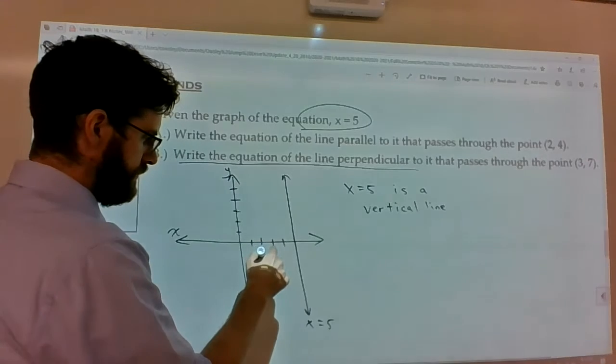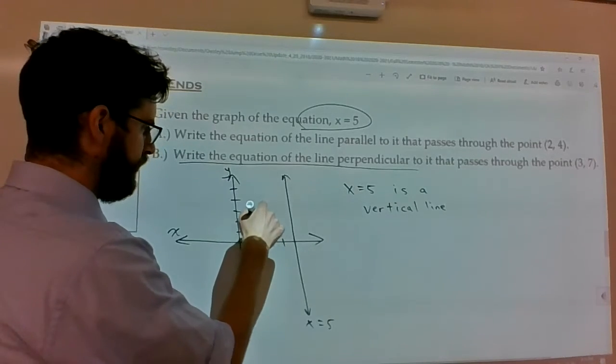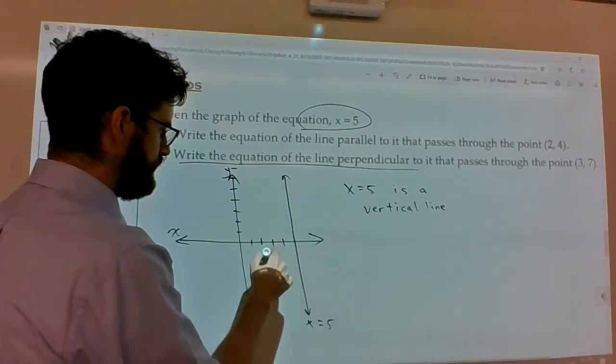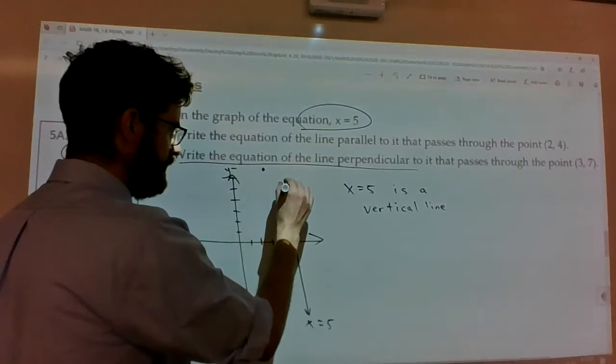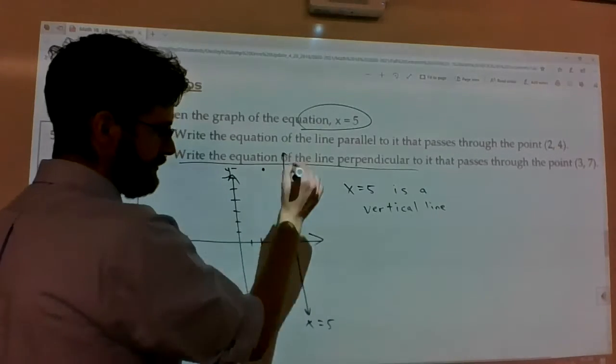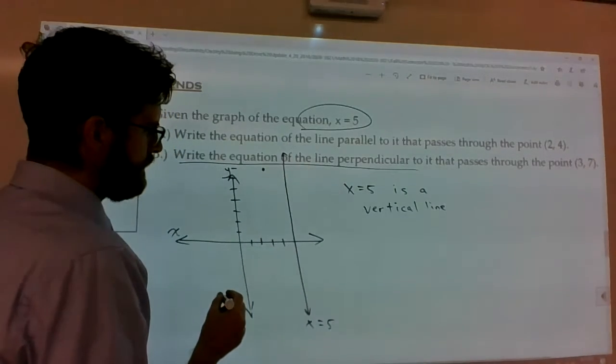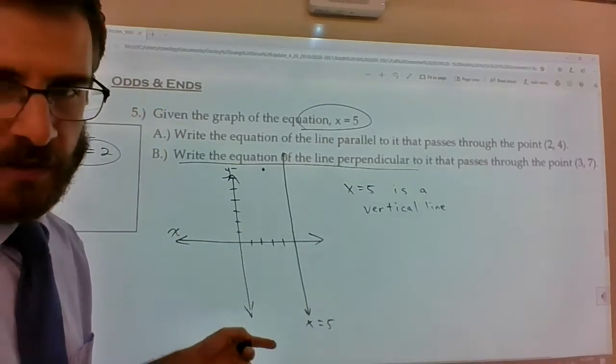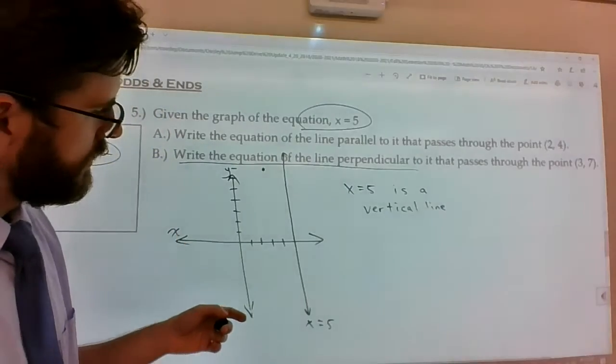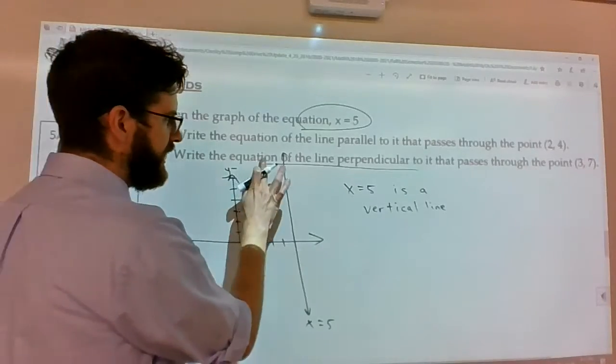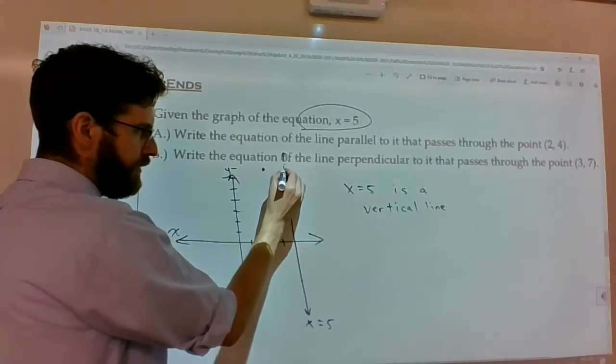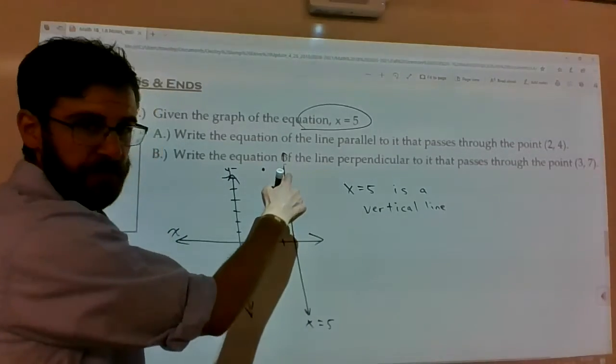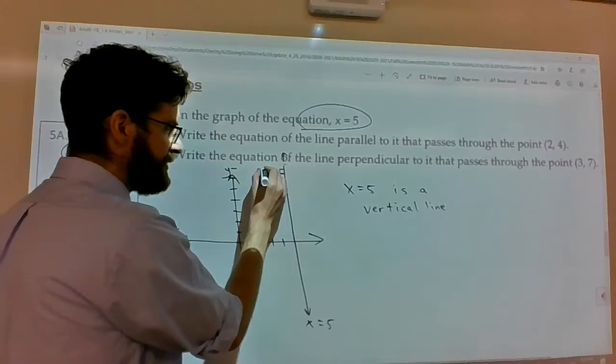So here's the point 3, 7. And then x equals 5 keeps going up here. What would it look like to be perpendicular to it? What kind of line creates a 90 degree angle with this vertical line and also passes through here?